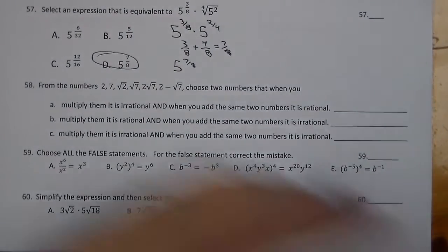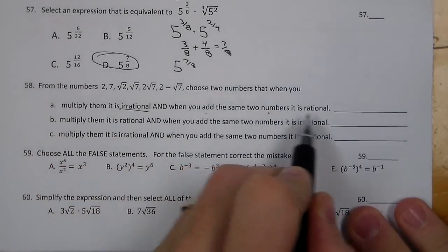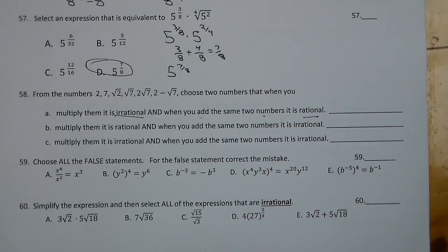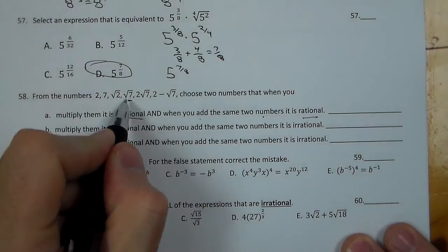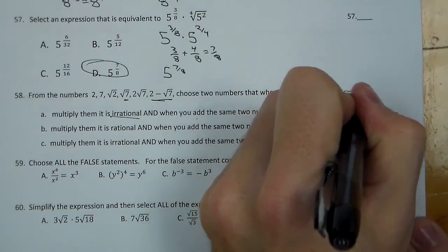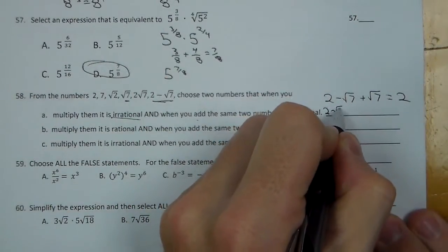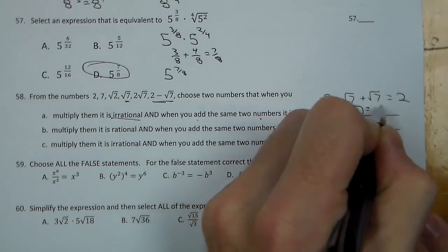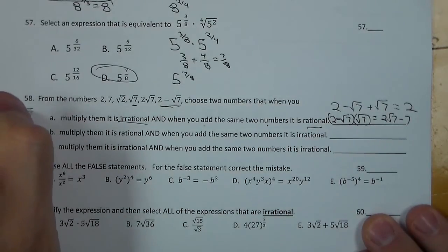For 58, we need to take the options — 2, 7, 2 root 7, and 2 minus root 7 — and find pairs that multiply to give irrationals but add to give rationals, or other combinations. For part a, if I add root 7 and 2 minus root 7, that gives 2, which is rational. If I multiply those two: root 7 times (2 minus root 7) equals 2 root 7 minus 7, which is irrational. So my answer for part a is 2 minus root 7 and the square root of 7.